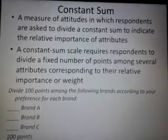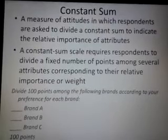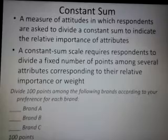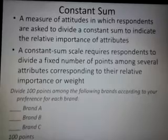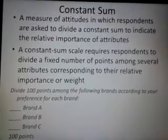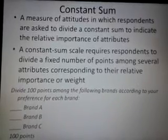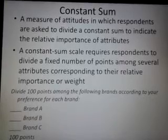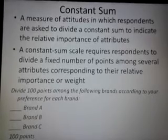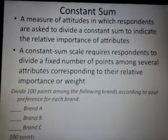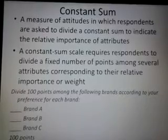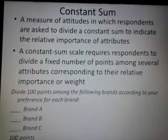If a respondent gives 50 to A, 40 to B, and 10 to C, the researcher understands that in comparison to A, B is somewhat lower but C is very low. And if a respondent gives 70 to A and 20 to B, it means in comparison to A, B is significantly lower.